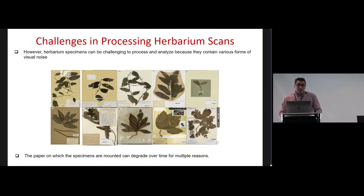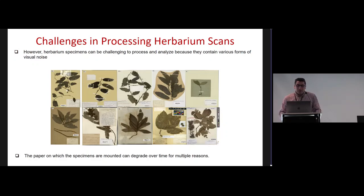However, herbarium specimens can be difficult to process with deep learning techniques, as they contain several non-plant elements which we consider as visual noise for deep learning models — including information labels, scale, color palettes, envelopes containing seeds or other organs, etc. Moreover, the paper on which the specimens are mounted can degrade over time, and often the paper's color darkens, in some cases approaching the color of the plants.